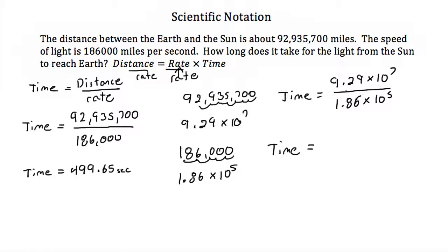The first step would be taking 9.29 and dividing by 1.86. Well, 9.29 divided by 1.86 is 4.99. These two numbers are in scientific notation, which means my answer is going to end up in scientific notation. So 9.29 divided by 1.86 is 4.99.